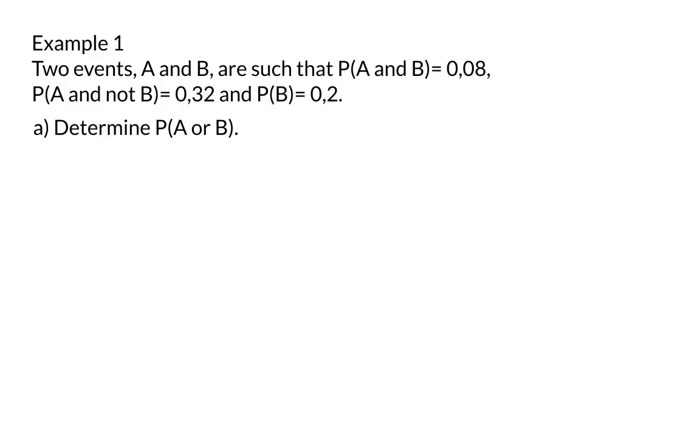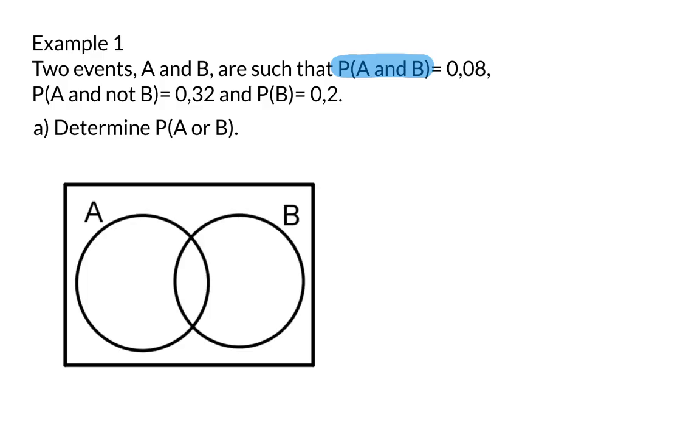To answer a question like this up to now, we would have simply used the definitions and each definition's formula. The difference here is that we now have the probability of A and not B. So, as soon as the combination is not the normal A and B, a Venn diagram will help you. Here, we were given a probability for A and B to happen, and that means there is an intersection. So, I am going to start off drawing a Venn diagram where the two circles intersect.